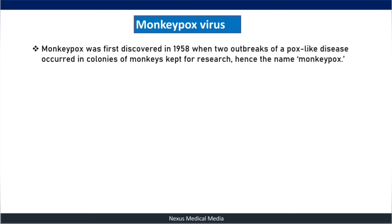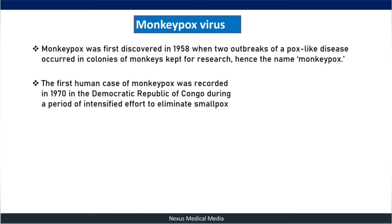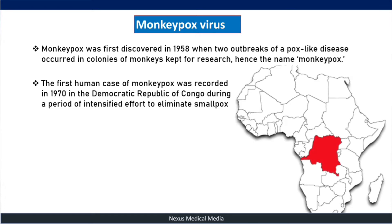A brief history: the monkeypox virus was first discovered in 1958 when two outbreaks of pox-like disease occurred in colonies of monkeys kept for research — that's where the name came from. The first human case was recorded in 1970 in the Democratic Republic of Congo (DRC) during efforts to eliminate smallpox. Since then, monkeypox has been reported in other central and western African countries, and in May 2022 there was a new outbreak.